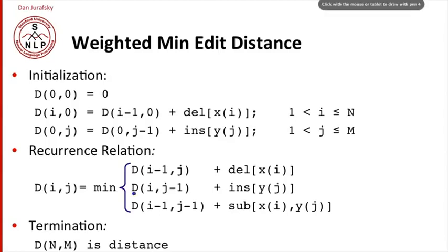So initialization, instead of just adding one for each deletion, we have the actual cost of each deletion, and we add up the deletions of each of the symbols that we delete. And instead of having just one for insertion, we have a cost for each insertion and we add them all up.